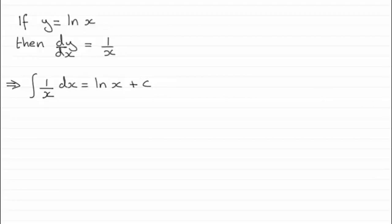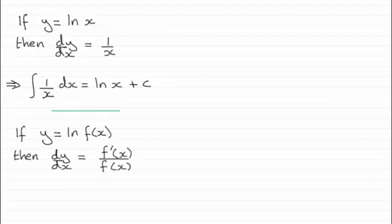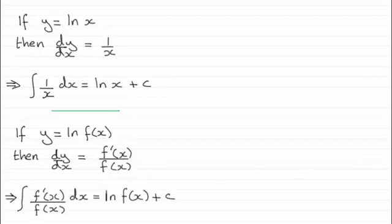And I also showed you that if we take this a bit further, if y equals the natural log of some function of x, f of x, then dy by dx was equal to f dash of x, that's the first differential of f of x, all divided by f of x. And that meant that if we were to reverse the process, the integral of f dash of x over f of x with respect to x led to the natural log of f of x plus a constant c.